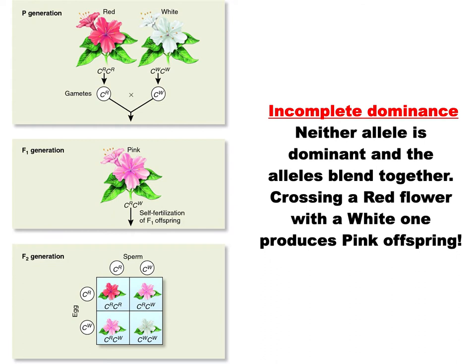The first one is called incomplete dominance, and it is just what it says. Neither allele is completely dominant over the other, so no matter what, they both get expressed. There's a blending of the alleles. So in this situation, we've got two plants we're going to cross: a red flower and a white flower.